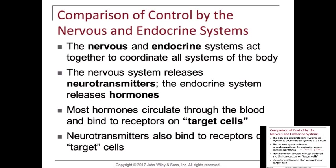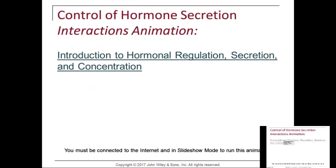The pre-synaptic side releases neurotransmitters through a process called exocytosis — the cell releases whatever protein is inside, whether that's a hormone, enzyme, or neurotransmitter. That's exocytosis. It releases it toward the post-synaptic side, where the membrane has a receptor on it. Those are neurotransmitters, while the endocrine system releases hormones that circulate through the blood and bind to receptors on target cells.